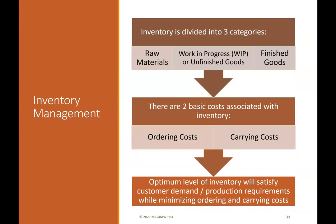Inventory management: inventory is divided into three categories — raw materials, work in progress (WIP or unfinished goods), and finished goods. There are two basic costs associated with inventory: ordering costs and carrying costs. The optimum level of inventory will satisfy customer demand and production requirements while minimizing ordering and carrying costs.